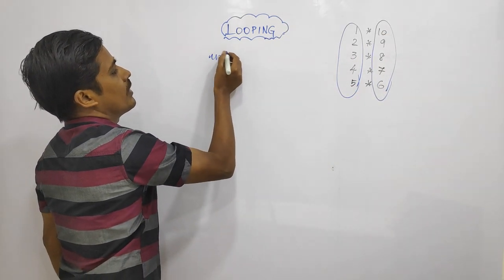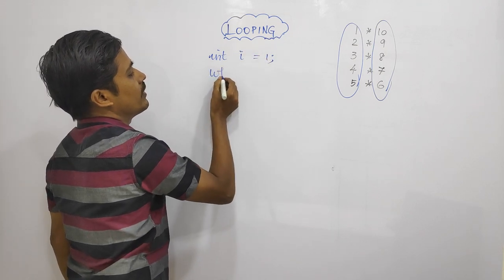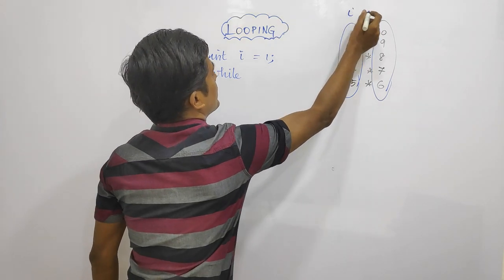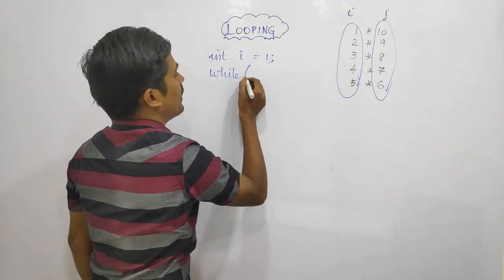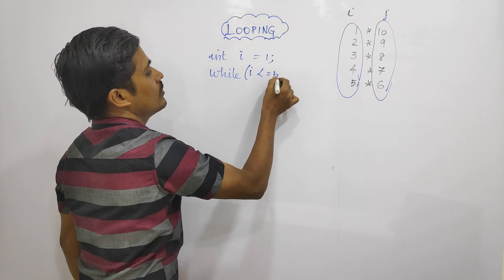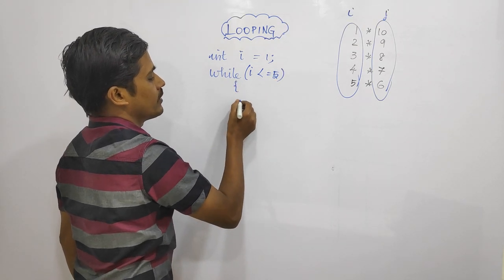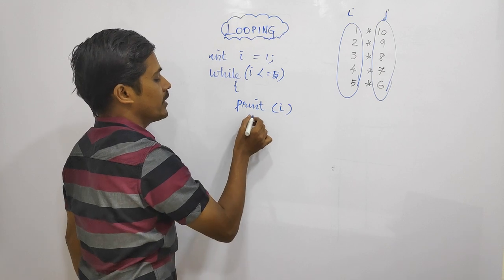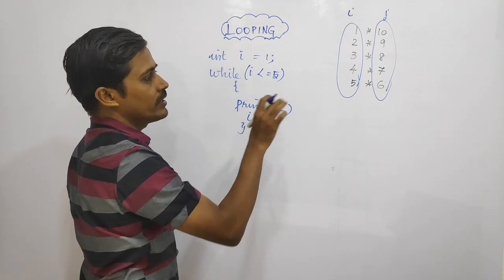int i equals 1. While i less than or equals to 5, print i, then i plus plus. This gives us 1, 2, 3, 4, 5.